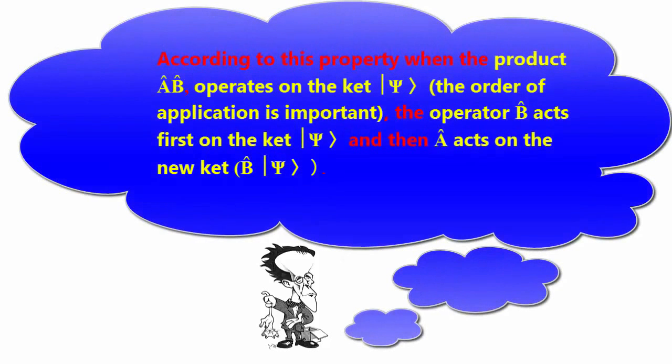According to this property, when the product AB operates on the ket |ψ⟩, the order of application is important. The operator B acts first on the ket |ψ⟩, and then operator A acts on the new ket (B|ψ⟩).